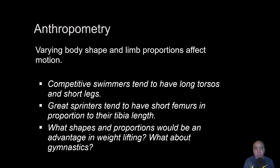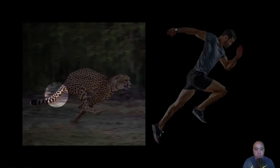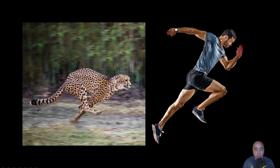Baseball pitchers who started in little league and went on to the pros have their upper torso and arms geared for the stresses and torques involved in pitching. These anthropometric measurements are vital for understanding how the mechanical properties determine the motion of a system — whether we're talking about a cheetah or a sprinter — and how these anthropometric properties will influence that motion.